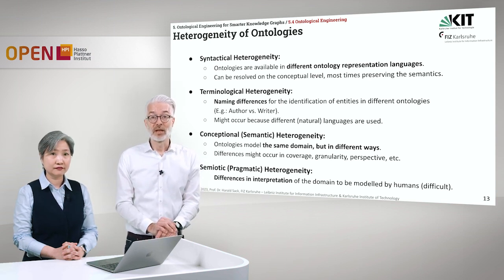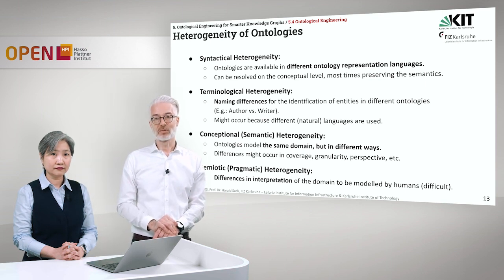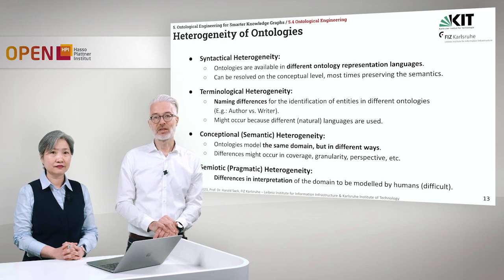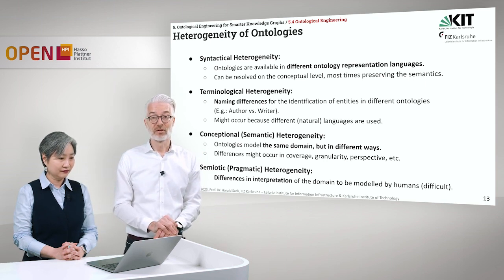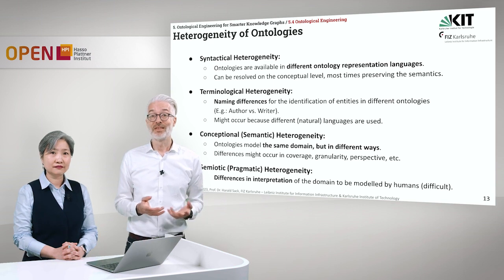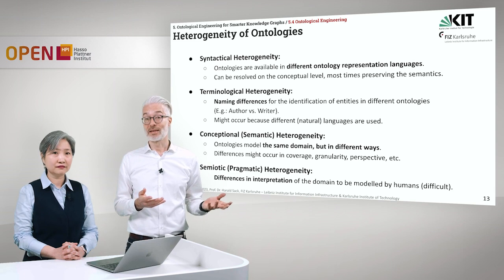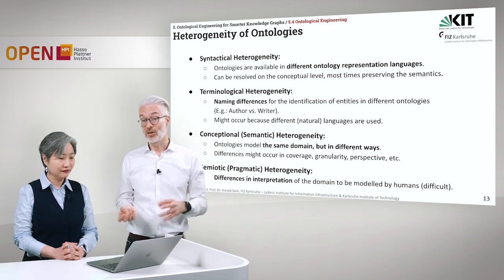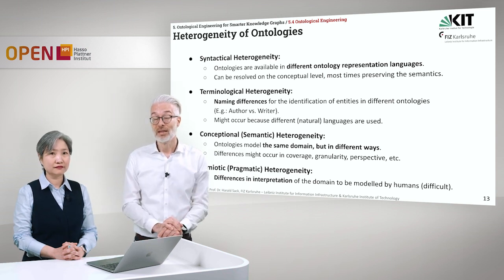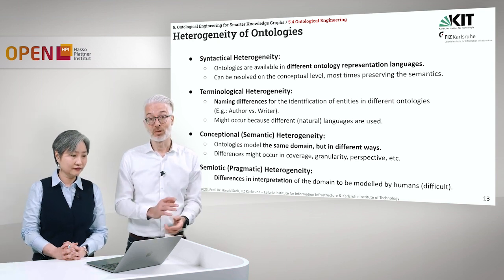Another type is terminological heterogeneity, which mostly refers to naming differences. When you identify entities in different ontologies, you might use different names for exactly the same thing — like author versus writer. This occurs because different natural languages might be used. If you have an ontology described in Italian and another described in German, translation is again necessary. There is terminological heterogeneity, and it is difficult to map them to each other.